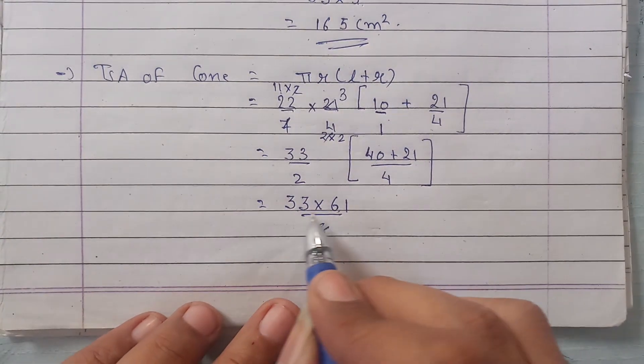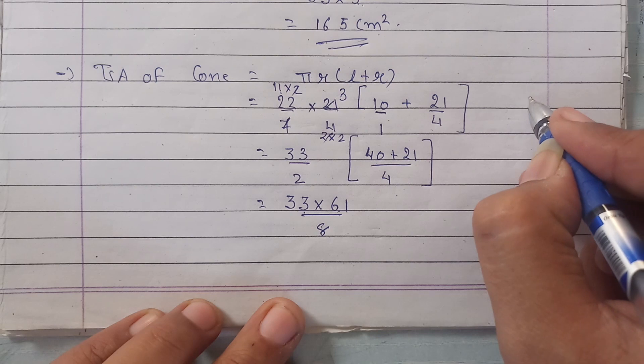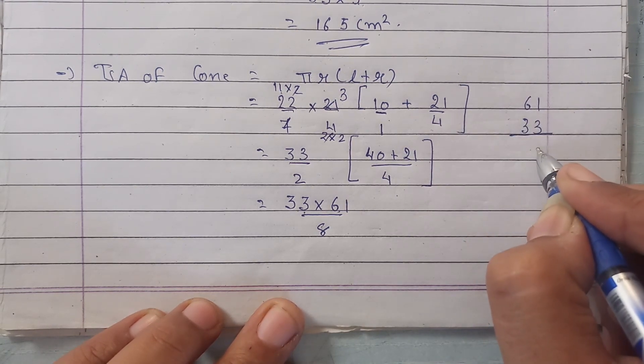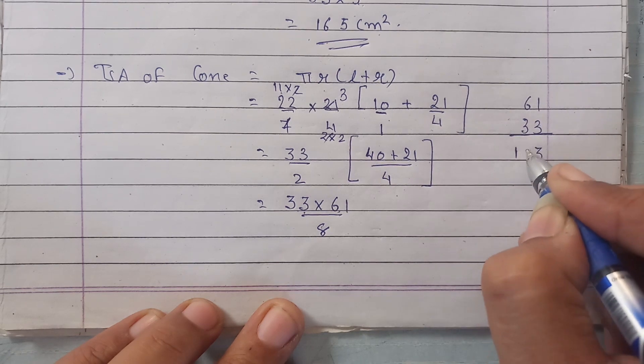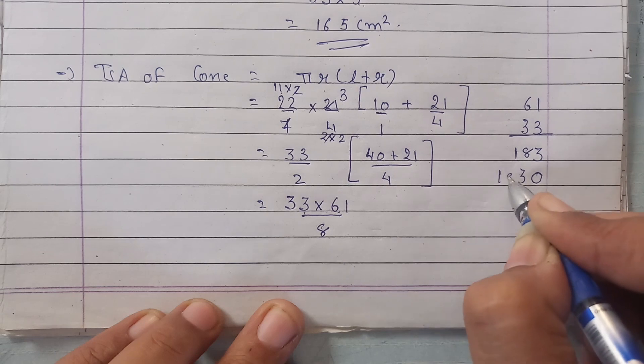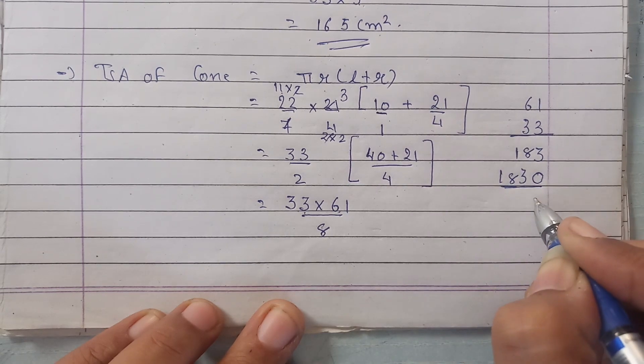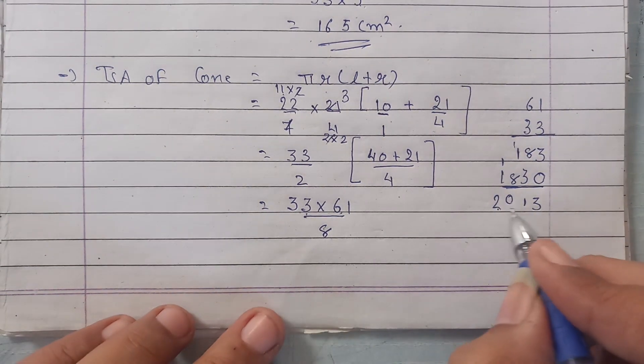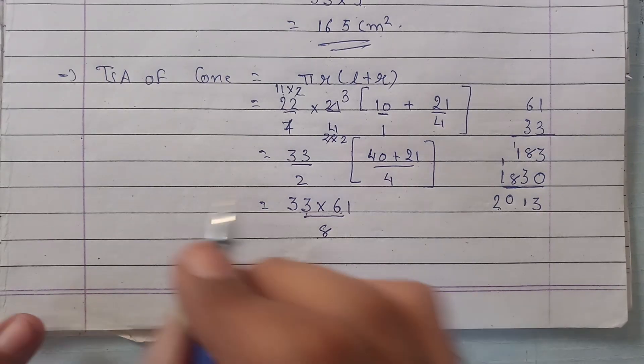So we have to multiply 61 and 33. On multiplying this: 3 into 1 is 3, 3 into 6 is 18. Fill lagayenge 0, 3 into 1 is 3, and 3 into 6 is 18. Now adding this: 3, 11, 10, 2. So this is 2013. Ab isko 8 se divide karna hai.